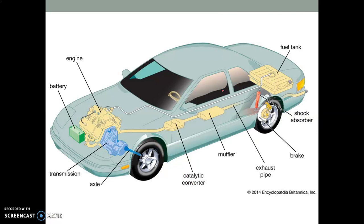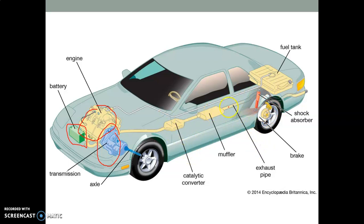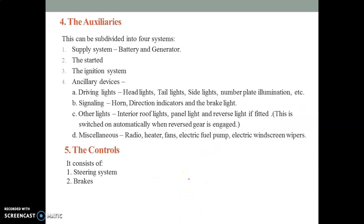The next slide represents general components of an automobile — those already discussed and those yet to be covered. Here is the engine, also called the power plant, and the battery for electrical energy. Here is the transmission system connected with the engine, the front axle, and other parts like the catalytic converter, muffler, exhaust pipe, brake system, fuel tank, and shock absorber. Major components have been covered; remaining parts will be covered in the next video.